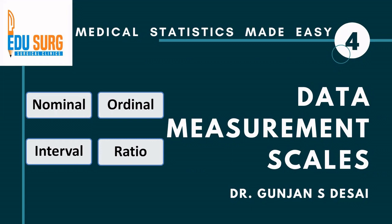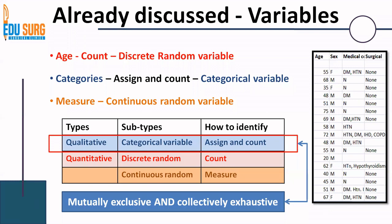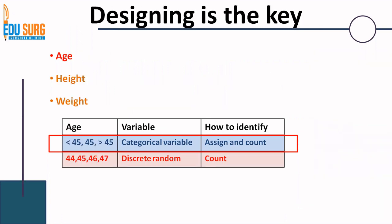We have seen in previous sessions that we are going to discuss the types of data in a way that measurement scales are incorporated in understanding types of data. We have already seen these four terms: nominal, ordinal, interval, and ratio. We have seen the types of variables — qualitative or categorical variables and quantitative, where you have discrete random and continuous random variables. We also saw the importance of understanding this topic in depth because designing is the key to your outcomes and analysis, and the same variables can be designed in multiple ways.